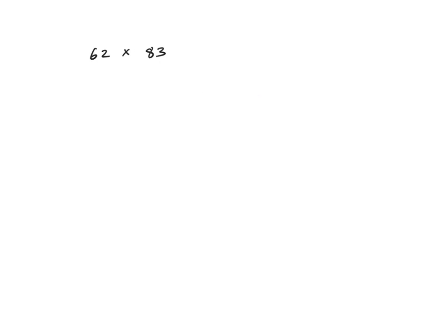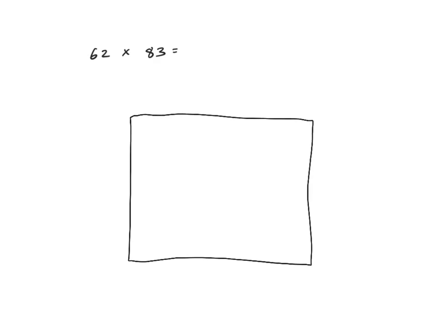Let's now look at partial products with a two digit by two digit multiplication problem. Just like before, the first step is to draw a large rectangle and label each side. Because the top side looks a little bit longer, I'm going to make it be the 83, and then the left side be the 62. Remember that the commutative property of multiplication says that 62 times 83 is the same thing as 83 times 62, so it doesn't really matter which side I label as which. Next, I'm going to write each of my factors in expanded form: 83 is the same thing as 80 plus 3, and 62 is the same thing as 60 plus 2.